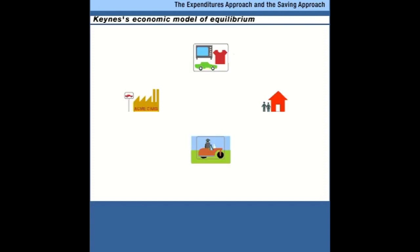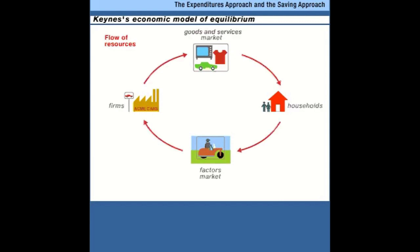We're going to start by thinking about the balance between consumers and businesses, between consumption and income. Here's the flow of resources. Consumers send their labor and capital to the factor markets where firms buy them, transform them into goods and services that flow back to the households as consumption spending. Households then pay for these goods and services, providing revenue to businesses that allows the businesses to hire the factors of production, putting income in the pockets of consumers.